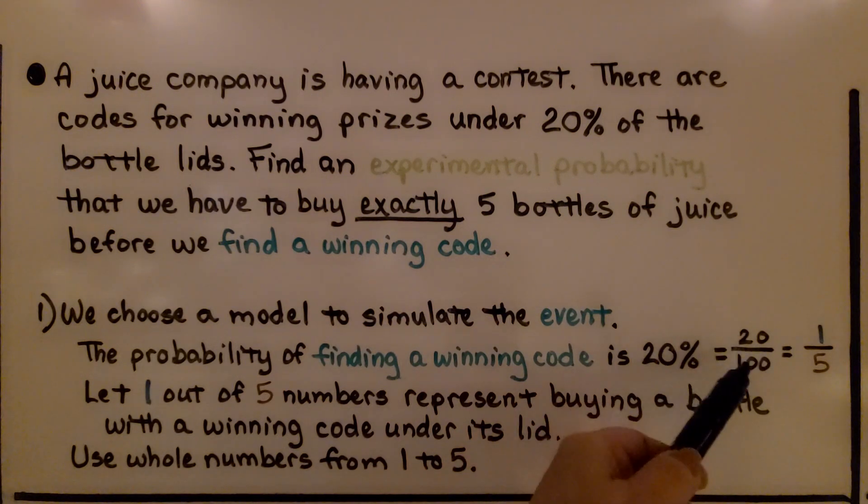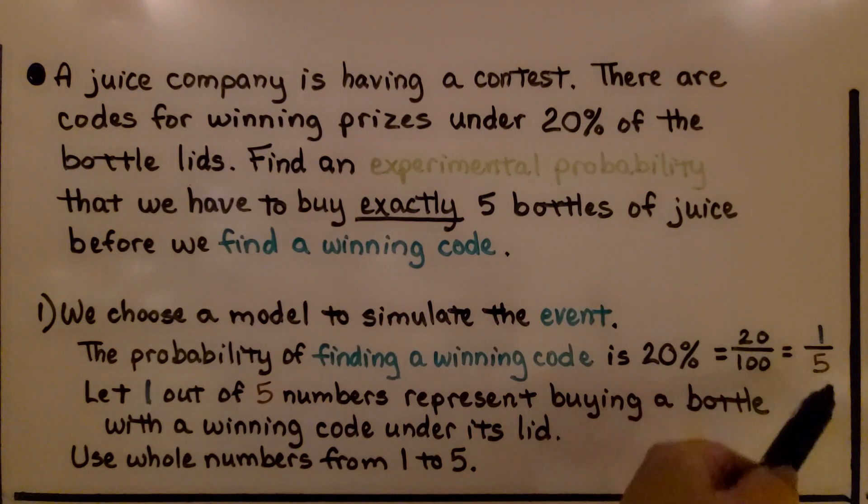That's 20 hundredths, which is equal to 1 fifth. We're going to let 1 out of 5 numbers represent buying a bottle with a winning code under its lid. We're going to use whole numbers from 1 to 5.